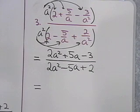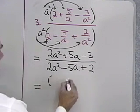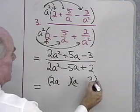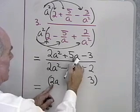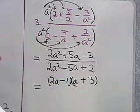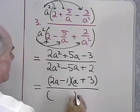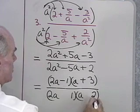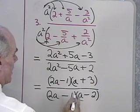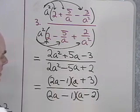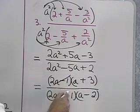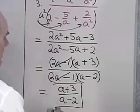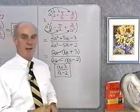Now I need to factor the numerator and denominator and divide out any common factors. In the numerator: 2a squared minus 5a plus 3 factors as (2a minus 3)(a minus 1) — inside 1a, outside 6a, they differ by 5a, made positive and negative. In the denominator: 2a squared minus 5a plus 2 factors as (2a minus 1)(a minus 2). I see a common factor; when I reduce to lowest terms I get a plus 3 over a minus 2. So those are a couple of different ways to simplify complex fractions.